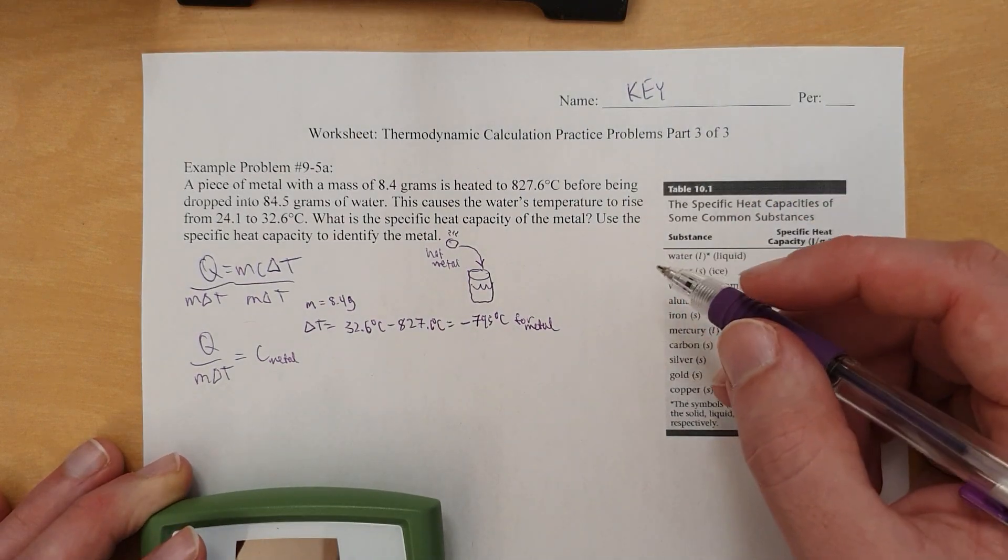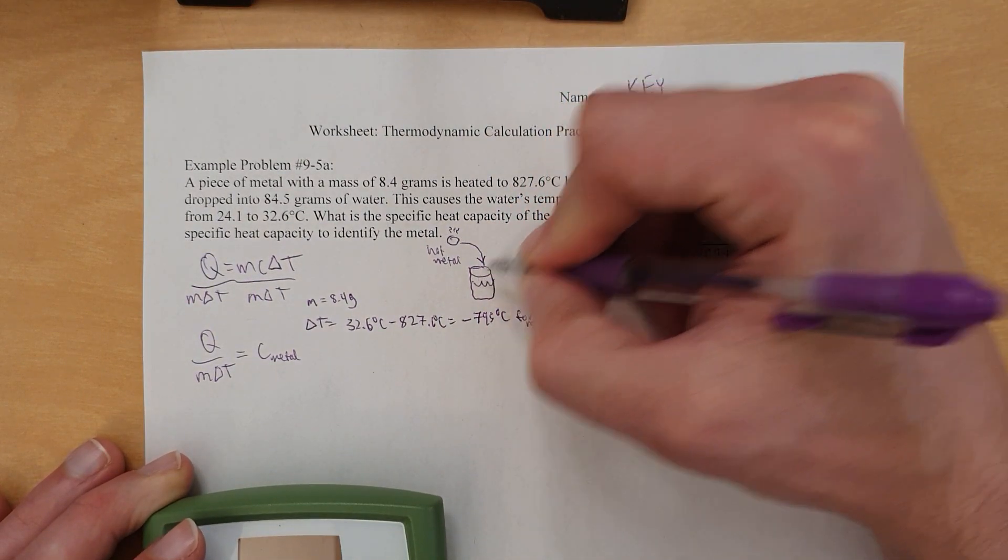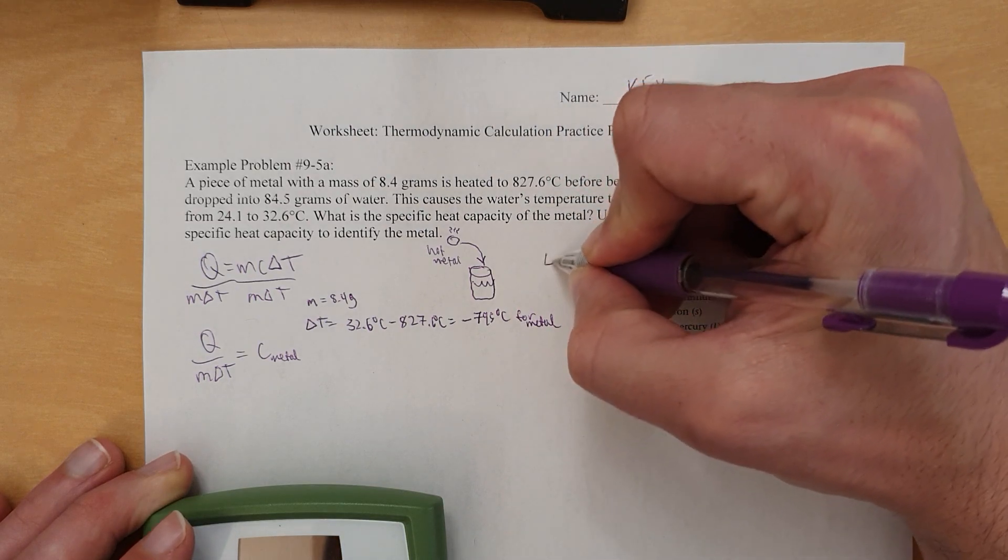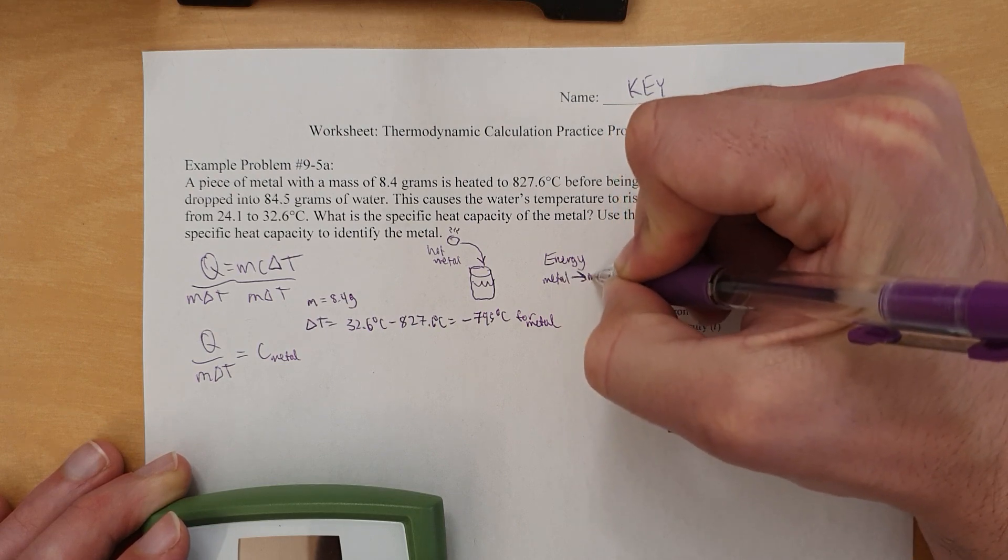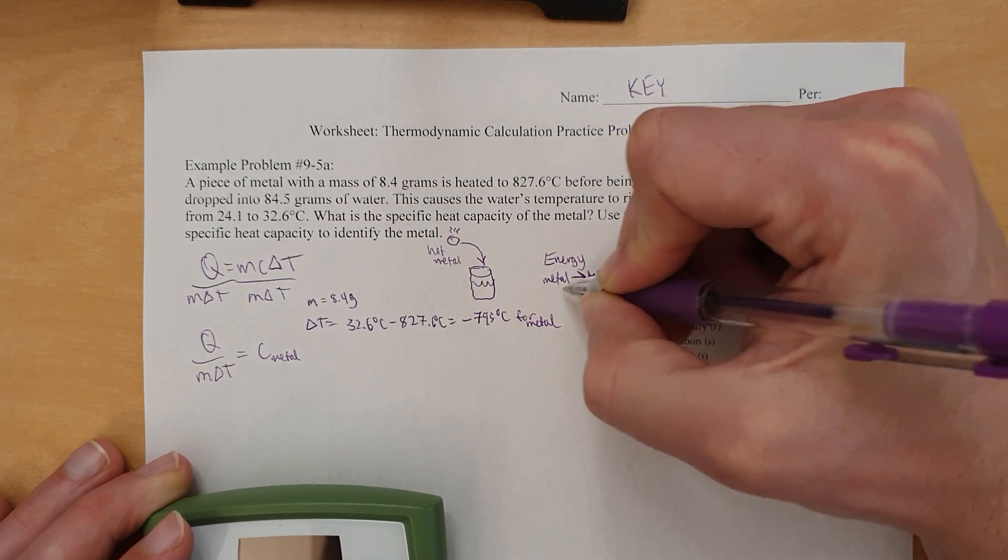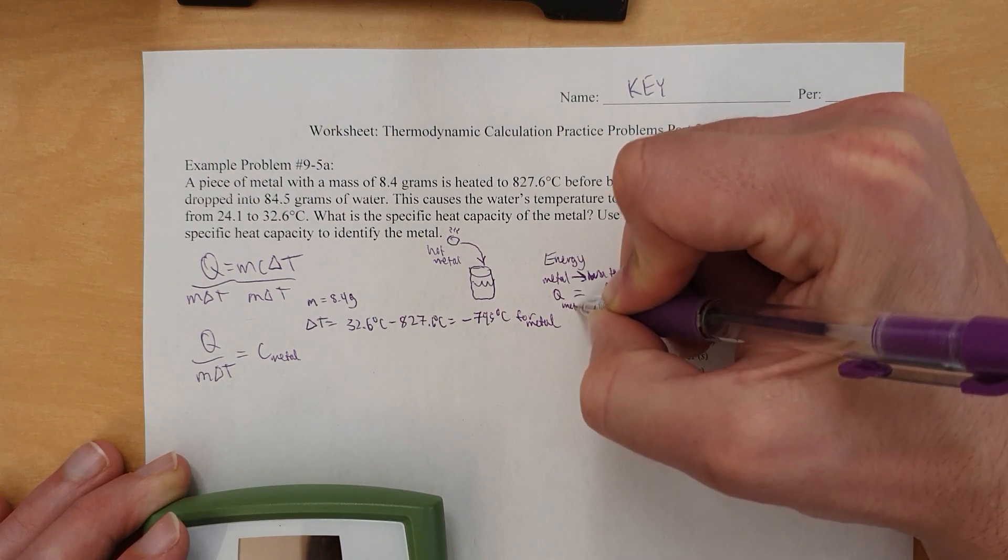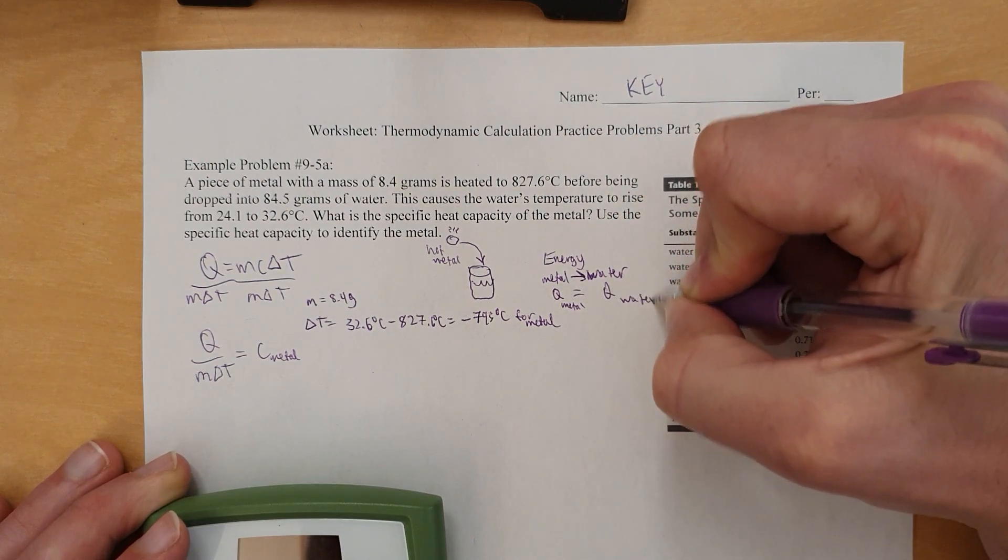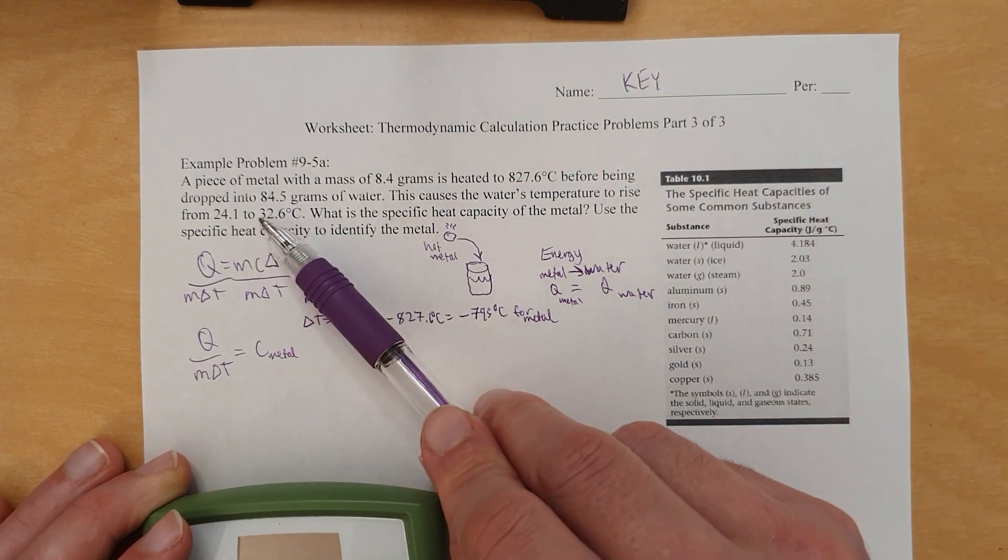So we need to understand that the metal, when it lost its energy, it lost it to the water. So energy went from metal to water. So Q of metal is equal to Q of water. However, we need to understand, if the metal got cooler, look, the water got warmer.